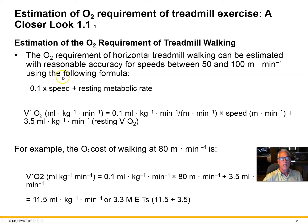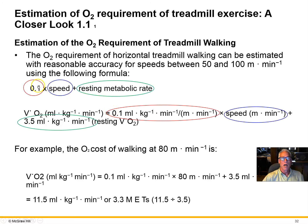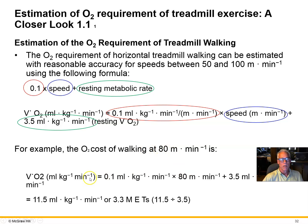Here's the formula: VO2 = 0.1 × speed (m/min) + 3.5 mL/kg/min. The 0.1 has units such that when multiplied by speed in meters per minute, the units cancel out and we wind up with mL/kg/min — the same units as the resting metabolic rate of 3.5 mL/kg/min. You always have to have matching units. We could not add the speed term to the resting metabolic rate unless they were the same units.